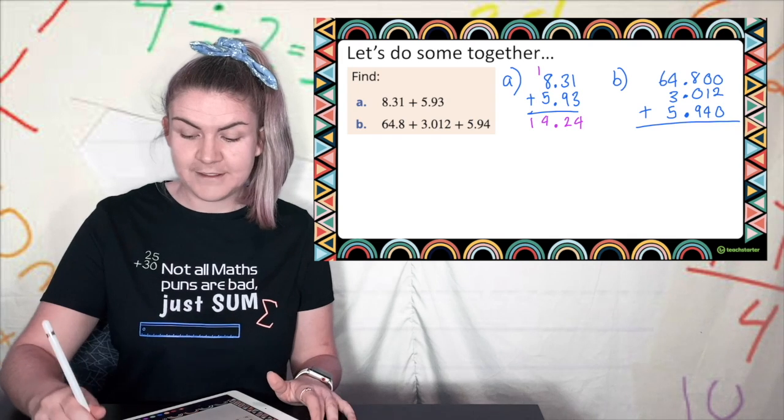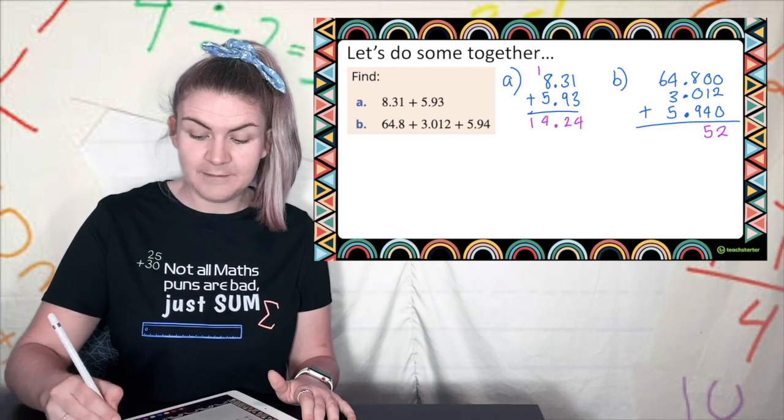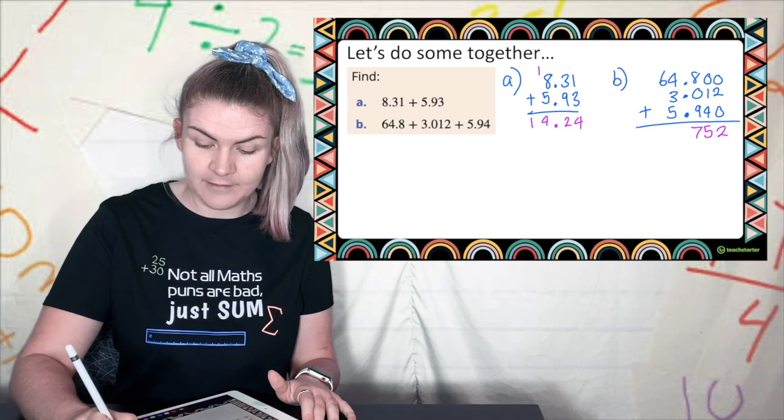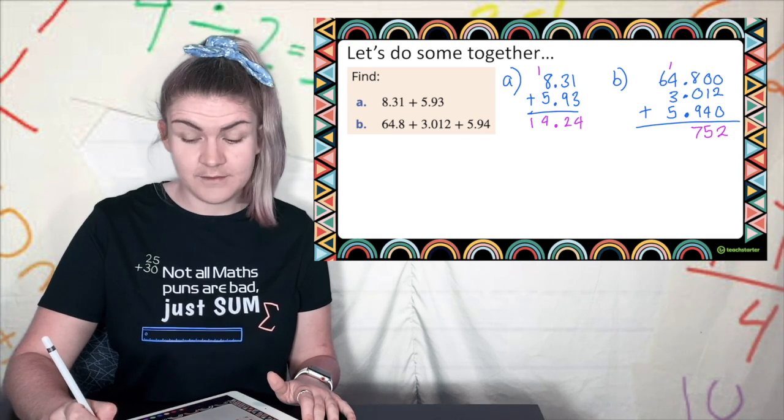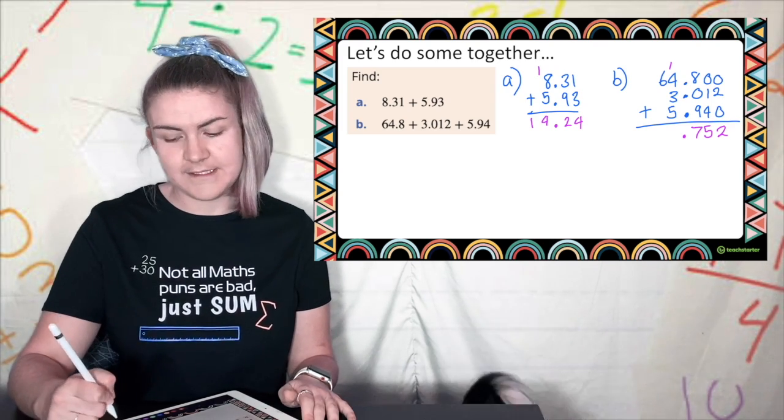Now I can add 0 plus 2 plus 0 is 2. 1 plus 4 is 5. 8 plus 9 is 17. 7 carry the 1. I've got decimal points. I'm putting a decimal point. 1 plus 4 is 5 plus another 5 is 10.